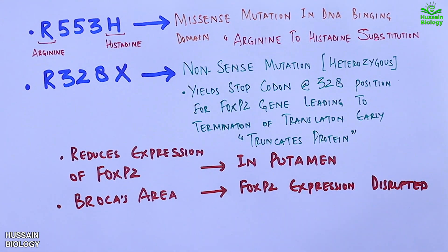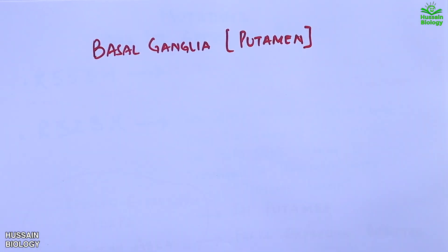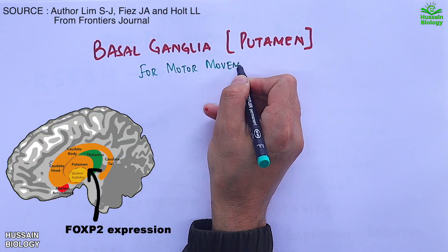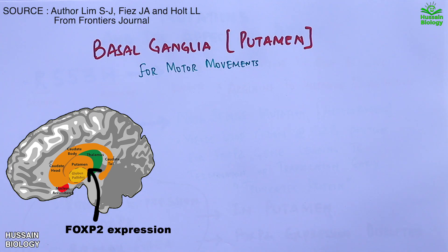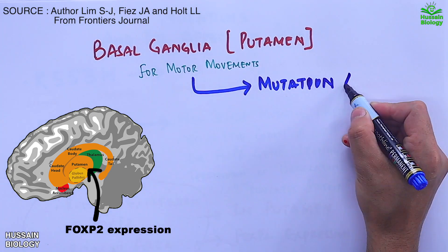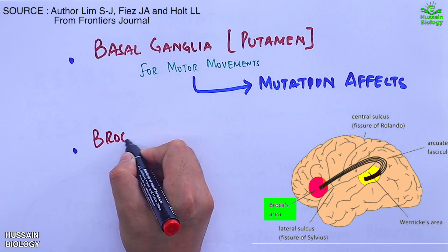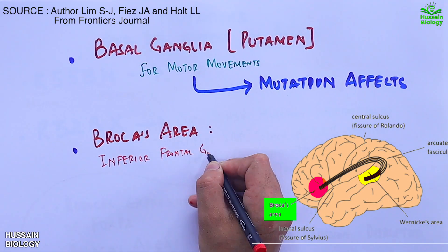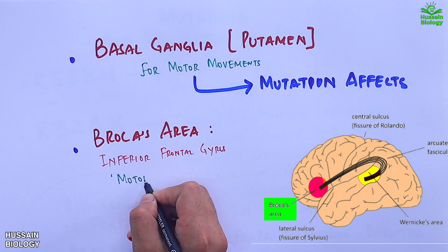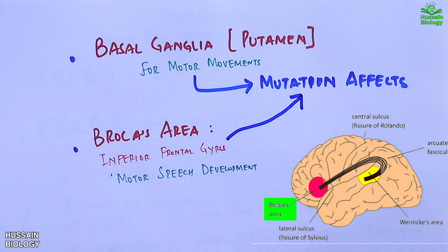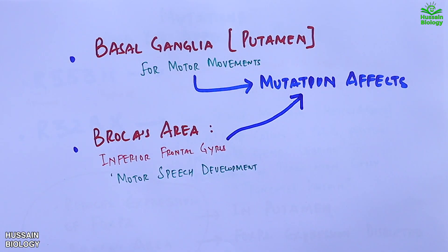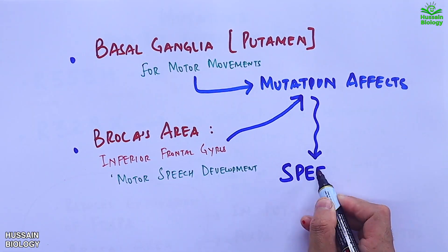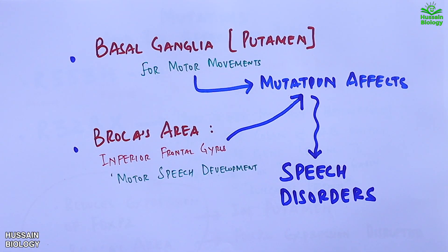Both of these mutations lead to reduced expression of the FOXP2 gene in the putamen and Broca's area, which develops speech disorders. The putamen, part of the basal ganglia, is associated with motor movements during speech, so the mutation disrupts this process. Broca's area, located in the inferior frontal gyrus, is also associated with motor speech development and is similarly affected.